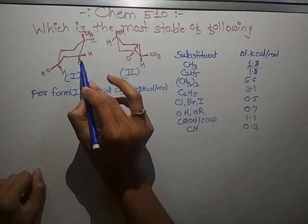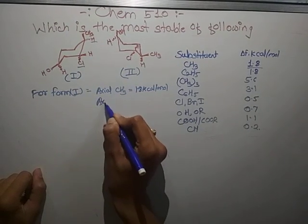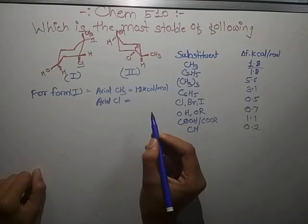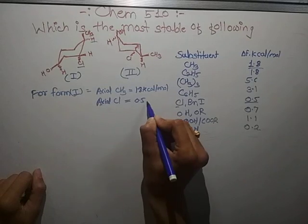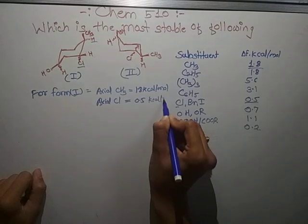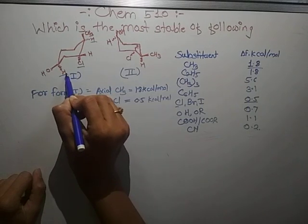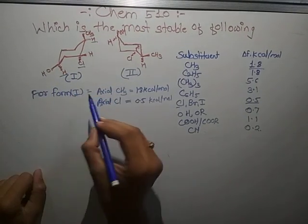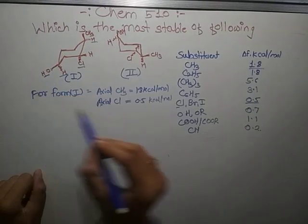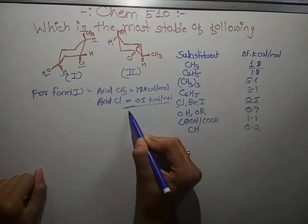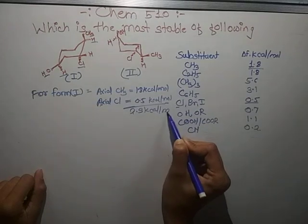Then here, axial Cl is present. The value of axial Cl equals 0.5 kcal/mol. Here axial H is present but has 0 value, and equatorial O is present but is neglected. So the total for this is 2.3 kcal/mol.